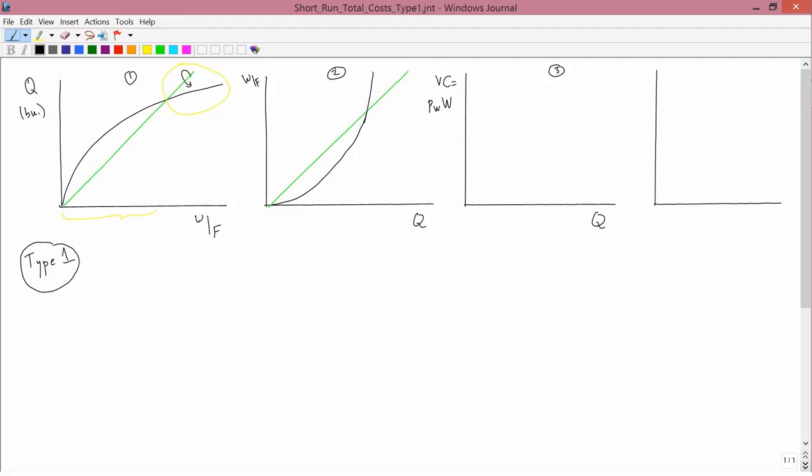In which case, making those changes, graph 3 would always look like graph 2. If you don't like that argument, there's another argument. Suppose the price of water is $2 a gallon. Then, variable cost would be 2 times W. Geometrically, that's like taking graph number 2 and stretching it out by a factor of 2 so that the new points would be twice as high as the old points.